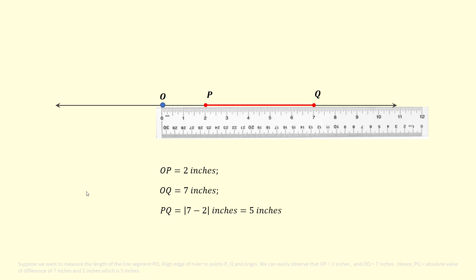Hence, PQ equals the absolute value of the difference of 7 inches and 2 inches, which is 5 inches. So this is how we can apply ruler postulate.